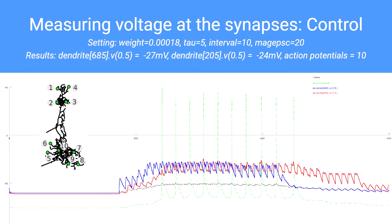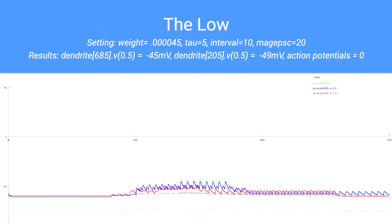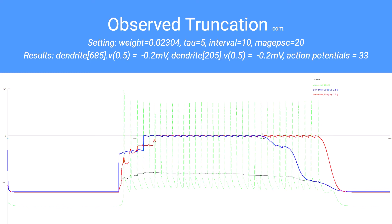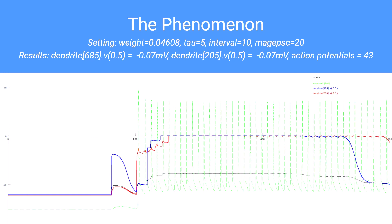With the weight decreased by a factor of 8, there is a nice low reading in which no action potentials are happening. The next image shows when we began to see voltage saturation — the weight is 0.00576, and you'll notice the duration is also increased. Another graph shows the truncation after the weight has been increased further, at which point the voltage does not increase but the duration has grown slightly. Finally, we see the phenomenon from Dr. Baines and Dr. Landgraf's research: the voltage of both dendrite locations is unable to go past zero millivolts, causing a straight line, while the duration is now surpassing 600 milliseconds.